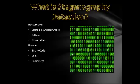Steganography tools change the least significant bits of a picture to bits within a document that someone is trying to hide. The byte will still display the proper image and keep outsiders from viewing the hidden one because the significant bits were unchanged.